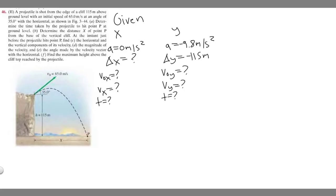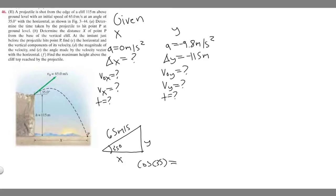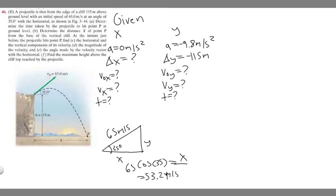The first thing we want to do is find the velocity components in X and Y. Setting up the vector triangle, we're traveling 65 meters per second at 35 degrees. For the X component, cosine of 35 equals adjacent over hypotenuse, so X equals 65 times cosine of 35, which gives 53.24 meters per second. That is our horizontal initial velocity.